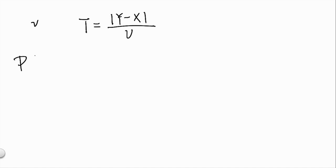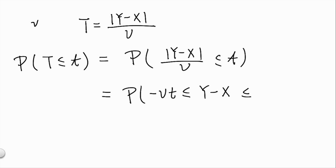If we look at the probability of T less or equal to little t, this is equal to the probability that |y minus x| divided by v is less or equal to little t. We take off the absolute value by writing the expression as -vt ≤ y - x ≤ vt. As a final step, we'll also move x to the other side of the inequalities by writing this as x - vt ≤ y ≤ x + vt.